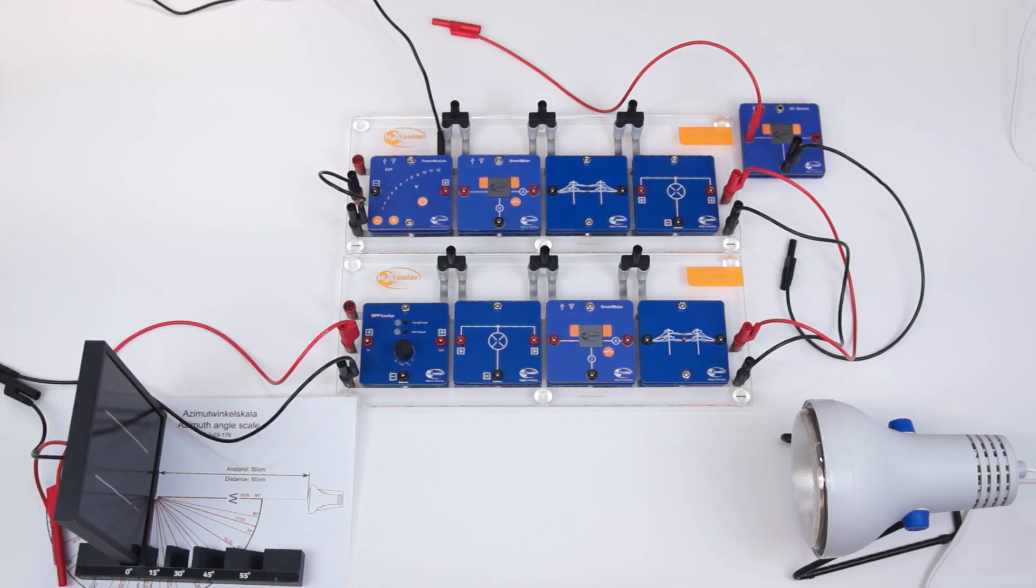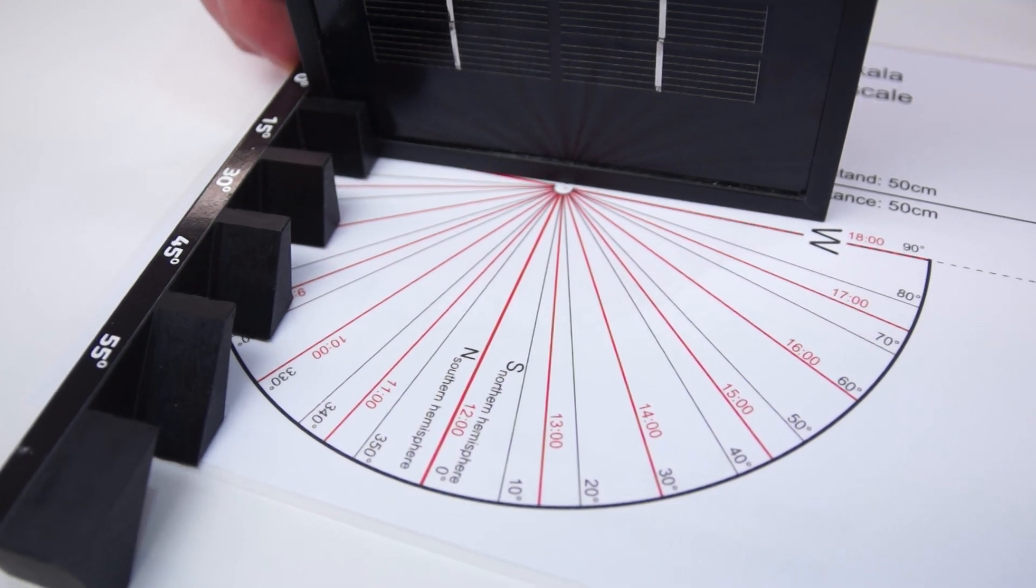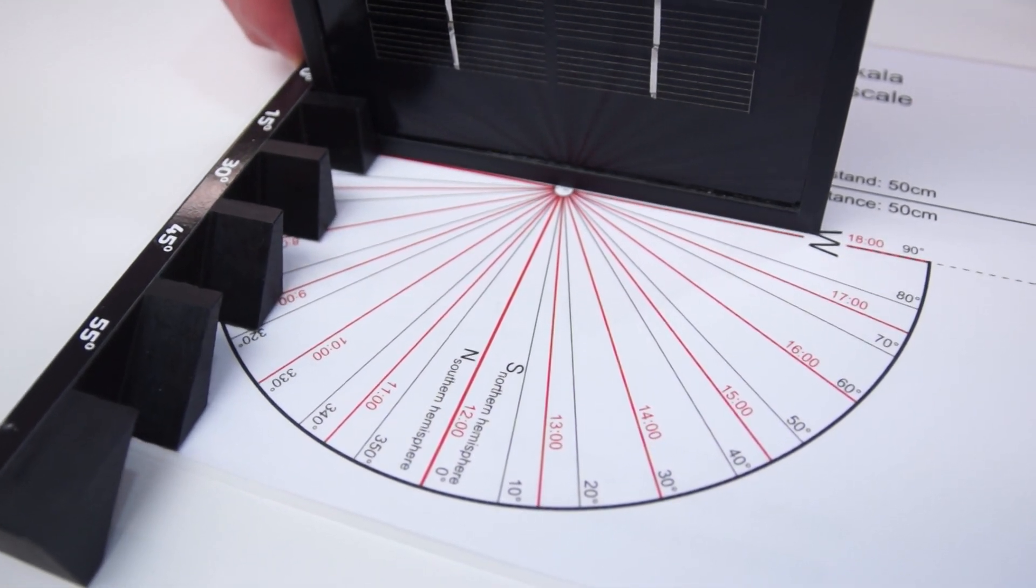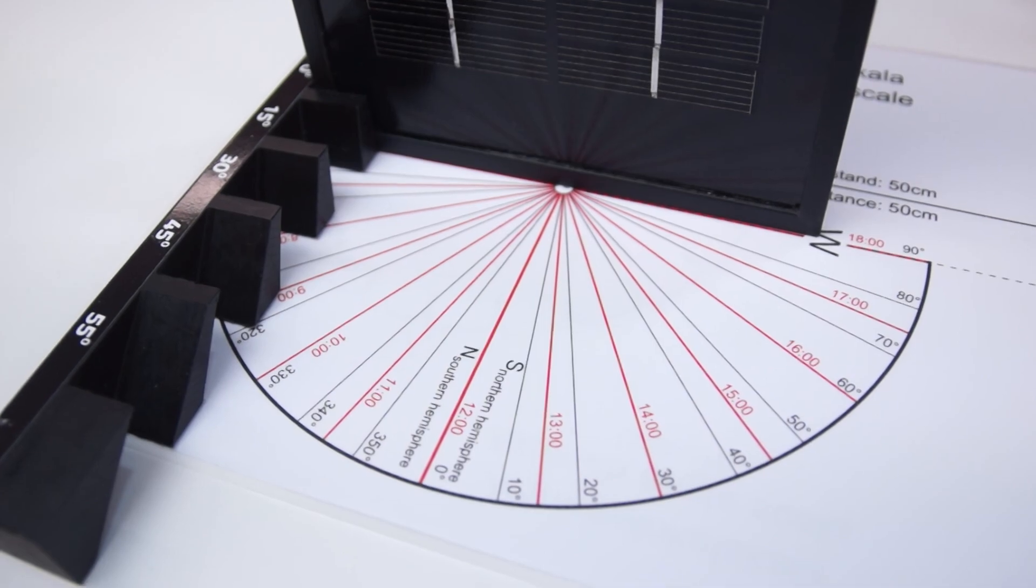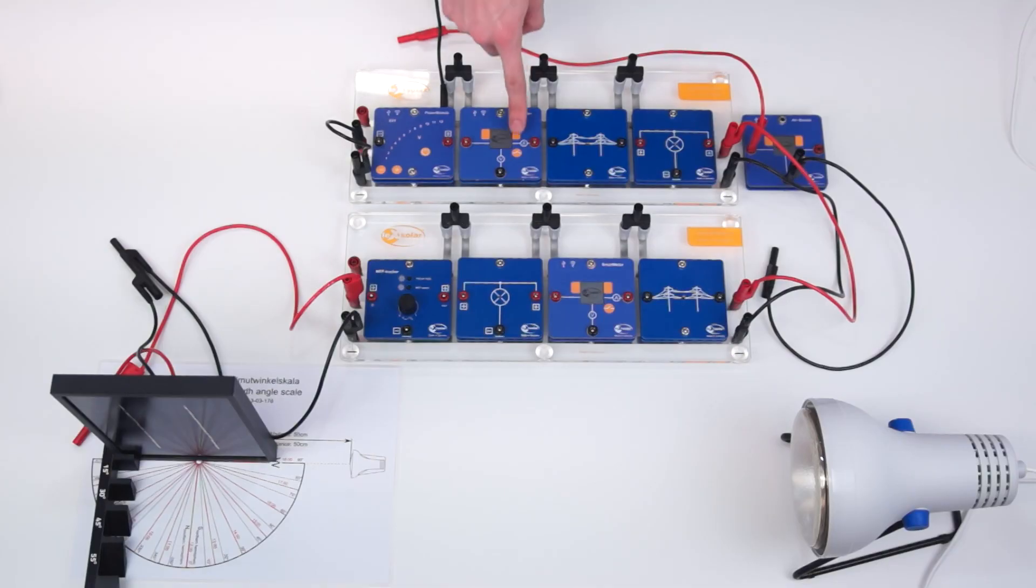Now follows the implementation of our experiment. First, we measure the voltage of both households with very low power supply. To this end, we adjust the solar module perpendicular to the lamp and thus simulate a time of 6 o'clock. In addition, we turn the meters on and close when appropriate, the switch or select the correct mode.